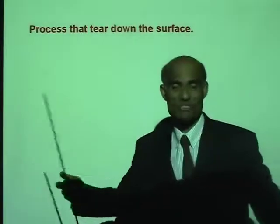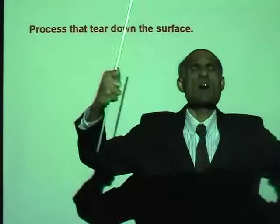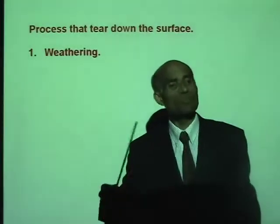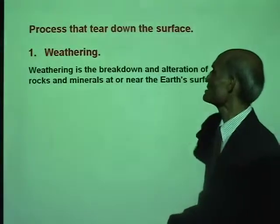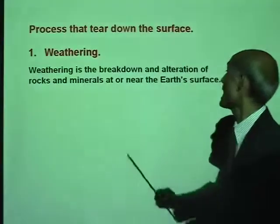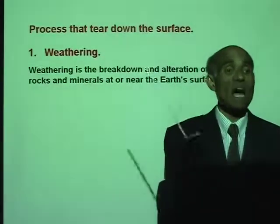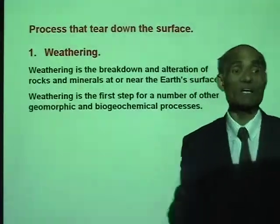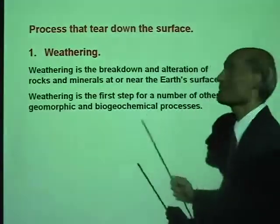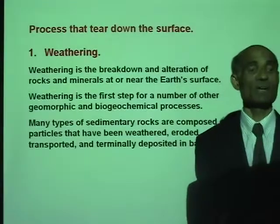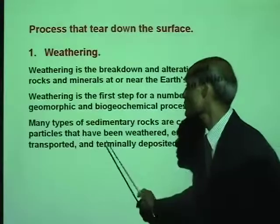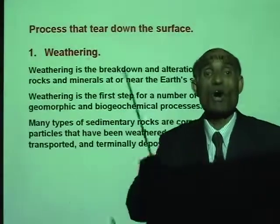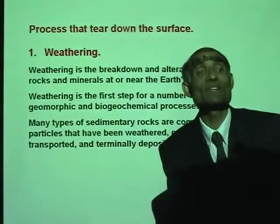What are the processes that tear down the surface? The surface of the earth is torn down and rebuilt over and over again. The first process is weathering. Weathering is the breakdown and alteration of rocks and minerals at or near the earth's surface. Weathering is the first step for a number of biochemical and geomorphic processes that change the surface of the earth. Many types of sedimentary rocks are composed of particles that have been weathered, eroded, transported, and deposited in basins where they sit for millions of years, forming sedimentary rocks.